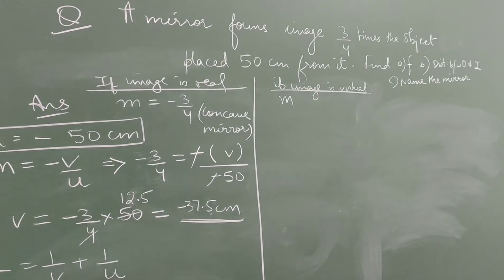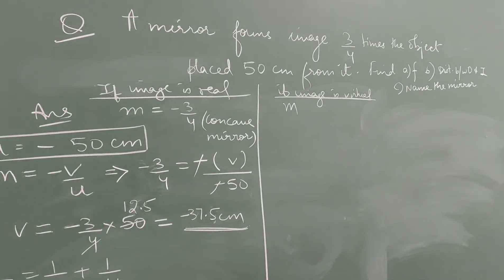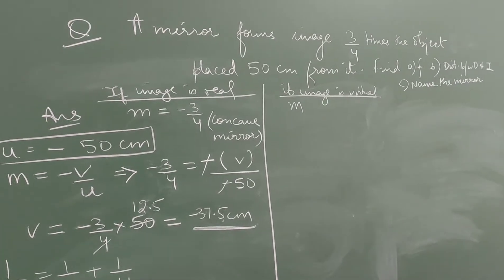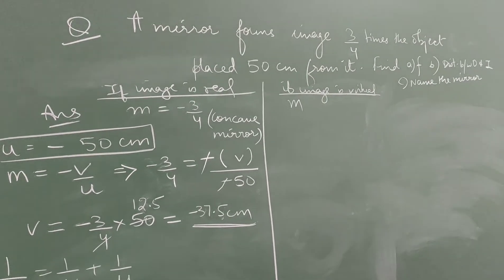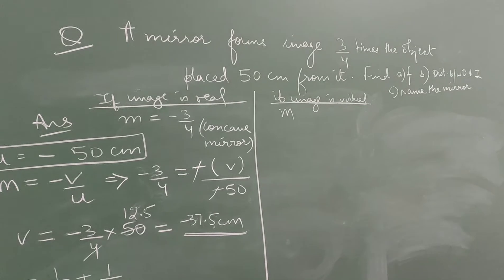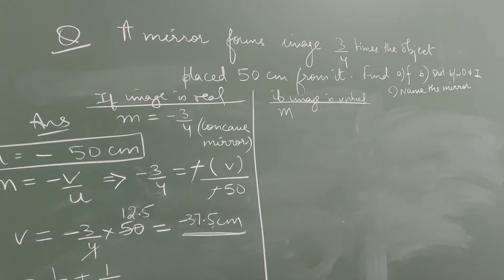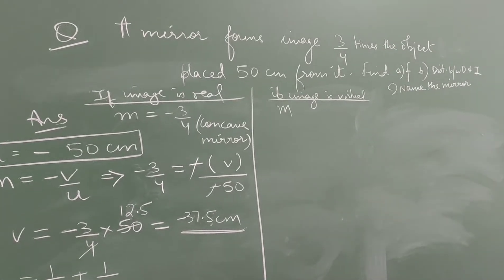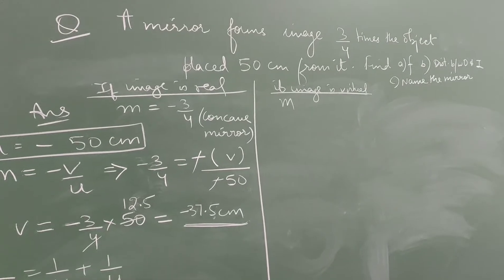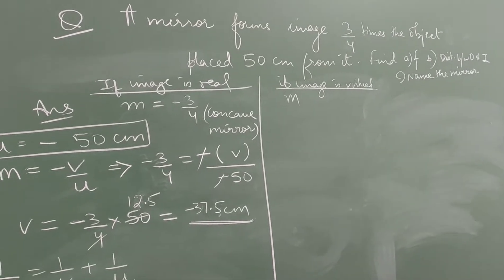The next question: a mirror forms an image 3/4 times the object placed 50 centimeters from it. Object distance is given. Find the focal length and distance between the object and image. Note: it has not been stated whether the image is real or virtual.